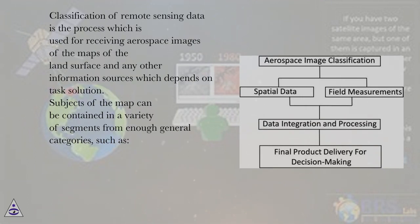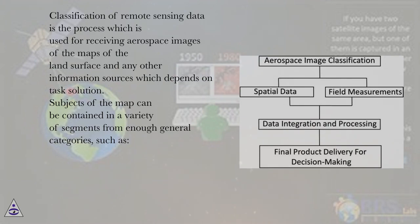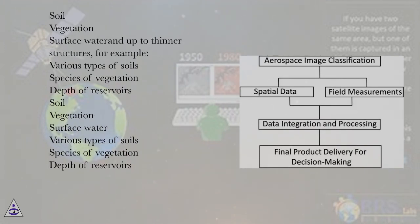Classification of remote sensing data is the process used for receiving aerospace images of the maps of the land surface and any other information sources, which depends on the task solution. Subjects of the map can be contained in a variety of segments, from enough general categories such as soil, vegetation, and surface water, up to thinner structures.